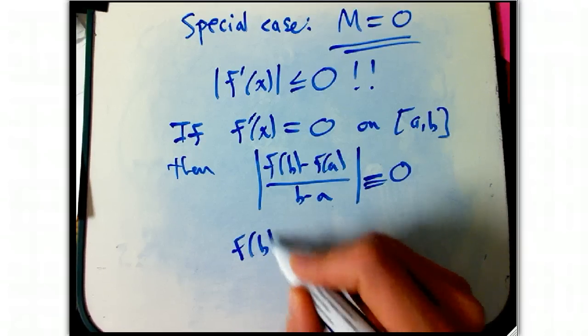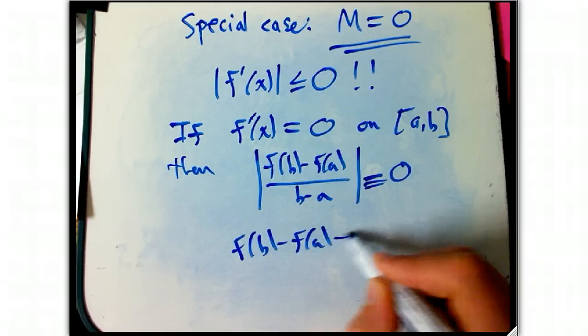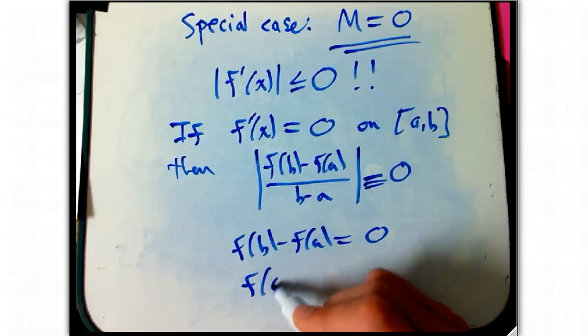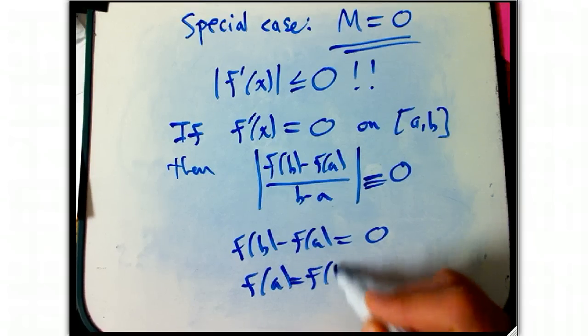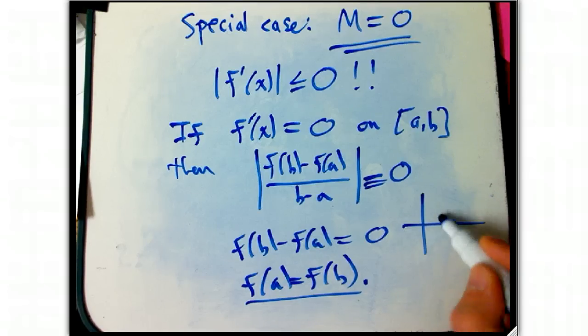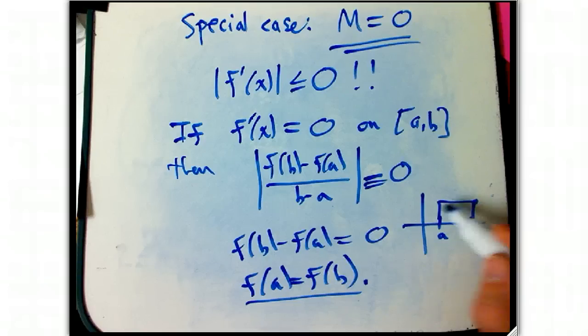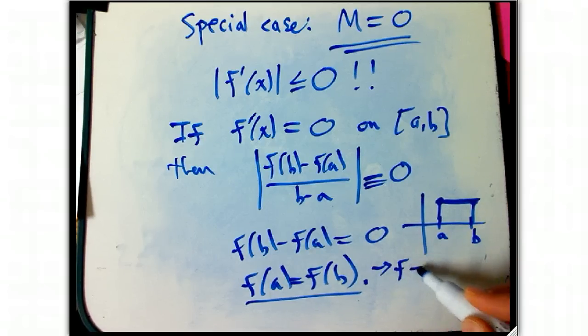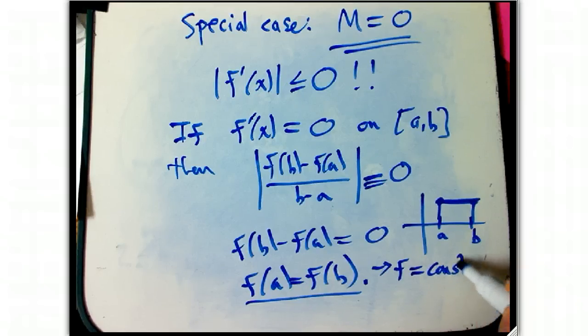And so, f of b minus f of a is 0 and f of a equals f of b. It didn't matter what a and b we picked though. Whatever a and b we pick, we've shown that it has the same values at those two points. We could have picked this point and this point, this point and this point, this point and this point. They're all equal. And so, f is a constant.